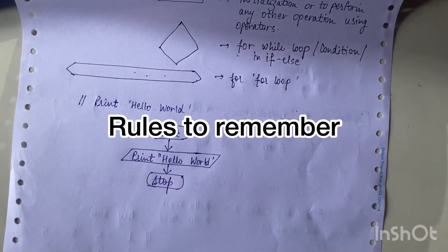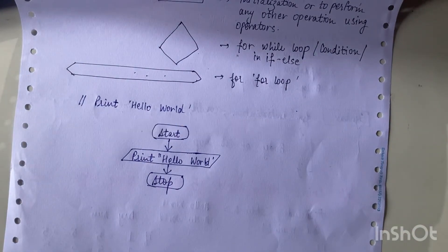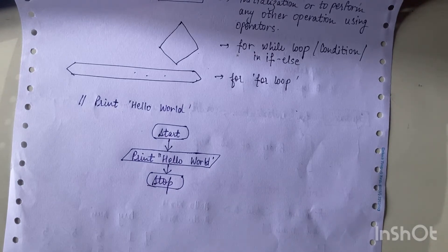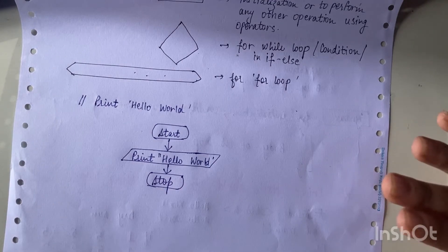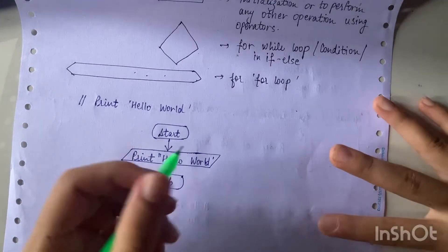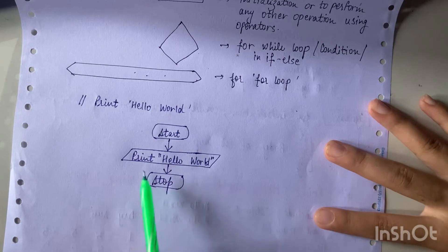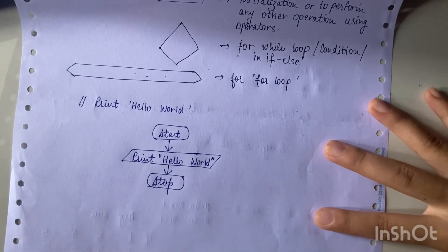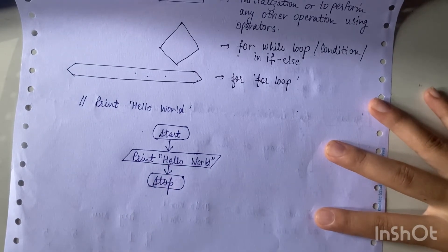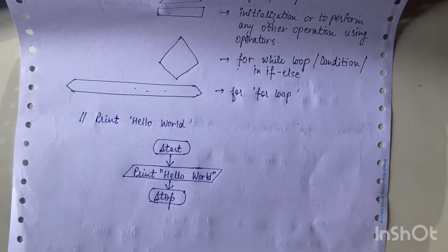In flowcharts, there are certain rules to keep in mind. We don't declare variables in flowcharts — so if in a loop we are using i, we don't declare i in the flowchart. We don't have to declare any variables in flowcharts. That's a basic rule of flowcharts, and that's how we draw this Hello World flowchart.